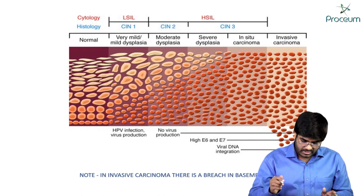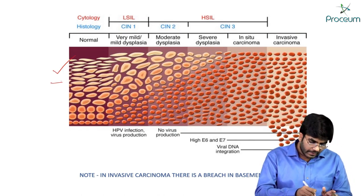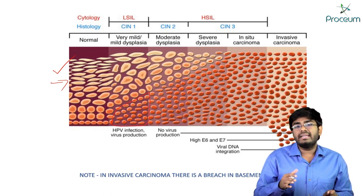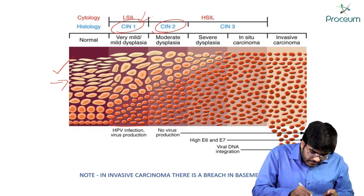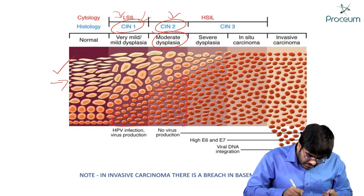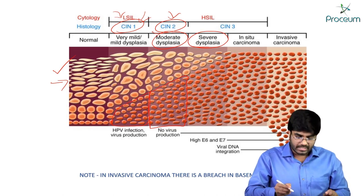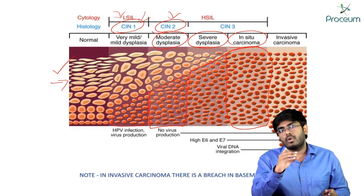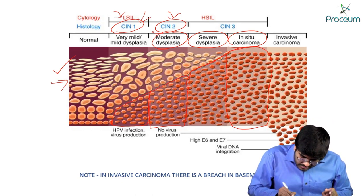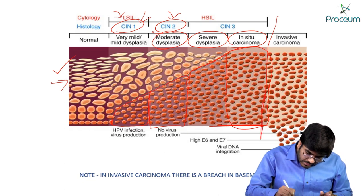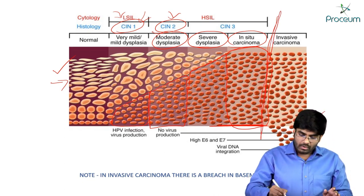Looking at the normal histology of the cervix: in CIN1 (LSIL per Bethesda), the lower one-third is affected. In CIN2, the lower two-thirds are affected. In CIN3, greater than two-thirds is affected. In carcinoma in situ, the whole epithelial lining is filled with abnormal or dysplastic cells. Importantly, the basement membrane is still intact throughout all these stages.